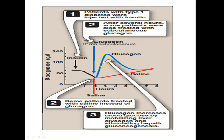This diagram shows what happens with insulin and glucagon administration. In patients with type 1 diabetes injected with insulin, blood glucose levels drop. Some patients were treated with saline instead of glucagon; others were treated with subcutaneous glucagon. After glucagon administration, glucagon increases blood glucose by mobilizing liver glycogen and stimulating gluconeogenesis. Remember that glucagon acts on two particular pathways: glycogenolysis and gluconeogenesis.